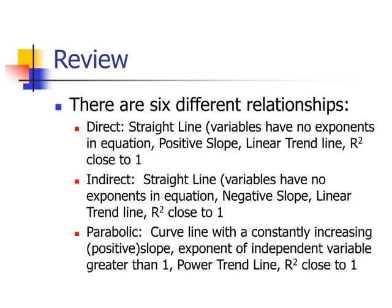Okay, so now let's start the review. There are six different relationships. You have direct, which is a straight line, and a graphing program will give you an equation with no exponents. It will always have a positive slope. In Microsoft Excel, you're going to use a linear trend line, which we will discuss a little bit later, and the coefficient of determination is going to be close to 1. An indirect is going to be a straight line. Again, the equation will have no exponents, or the exponents will be equal to 1. You're looking at a negative slope, and the coefficient of determination is going to be, again, really close to 1. Parabolic is a curved line with a constantly increasing slope, so if you were to take a bunch of tangent lines, the slope of the tangent lines are going to get increasingly close to infinity. The exponent of the independent variable will always be greater than 1 when the equation is determined from the graph, and, as usual, the r-squared value will be close to 1.